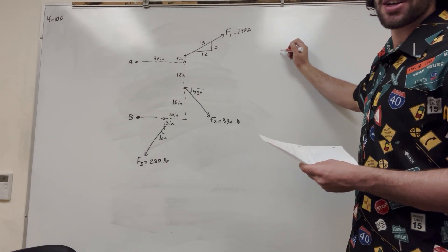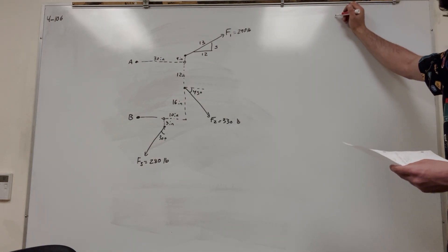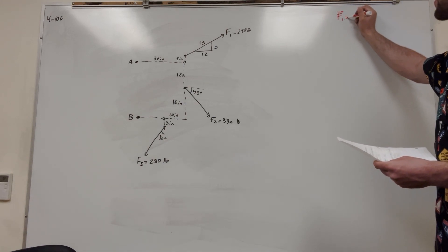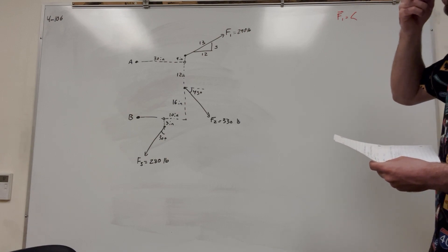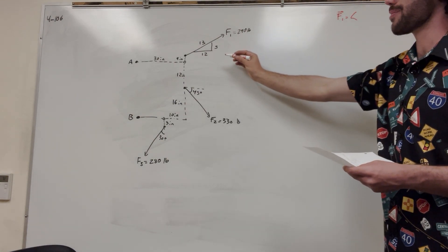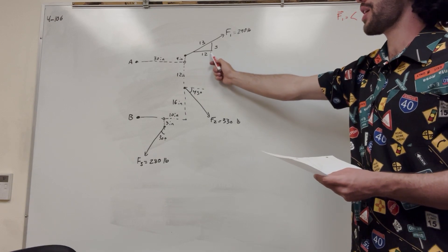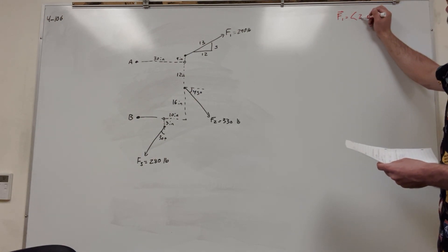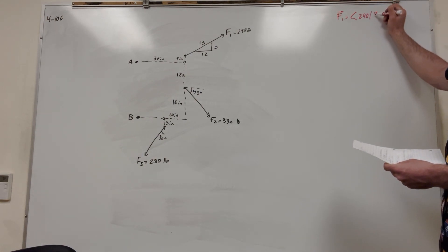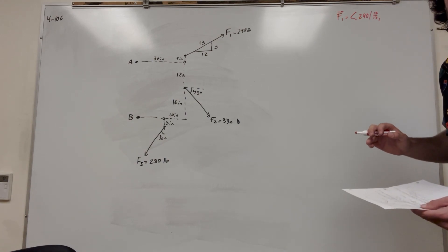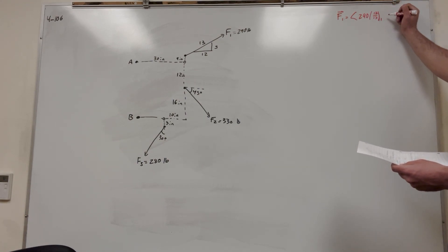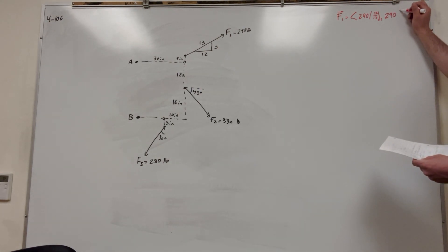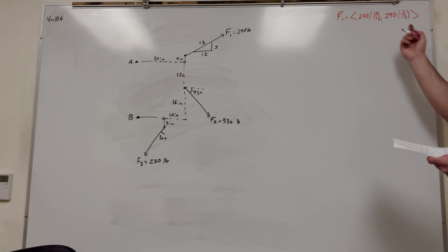So let's go ahead and break everything down into X's and Y's. Let's start with Force 1. So it's going to be 290, and if we're breaking it down into just the X direction, it's going to be 12 over 13 — the ratio of this triangle. So it's 290 times 12/13 in the X direction. And then the Y direction is going to be 290 times 5/13. So that's Force 1X and Force 1Y.